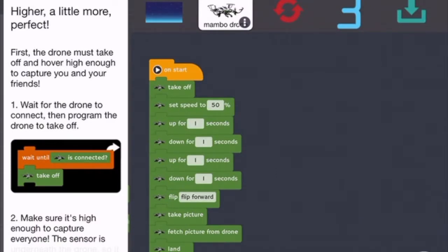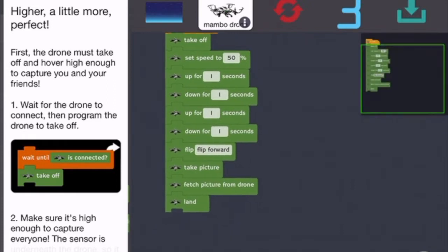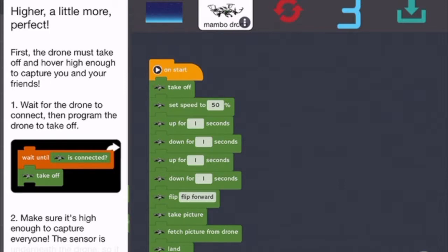For this particular one I set the speed to 50 because you can change the speed on things or the speed of the drone. Some people try and make it over 100 but 100 is the max.